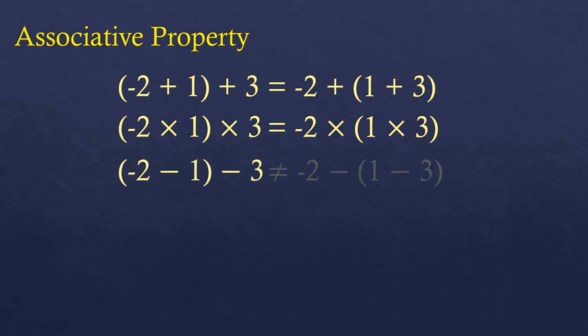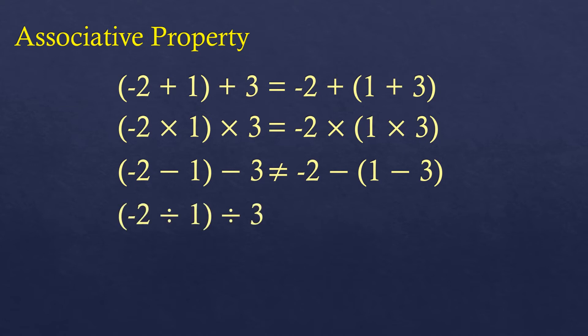But associative property is not true for subtraction. If you combine negative two and one first, it results to negative three, minus three, giving negative six. While on the other side, one minus three is negative two, and negative two minus negative two is zero. So it's not applicable for subtraction or division. Associative property for integers is only true for addition and multiplication.